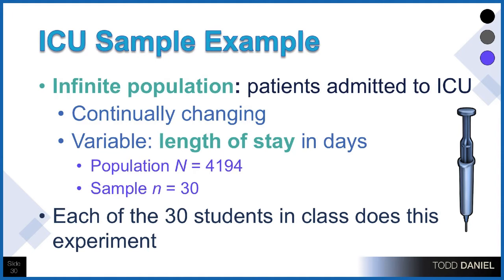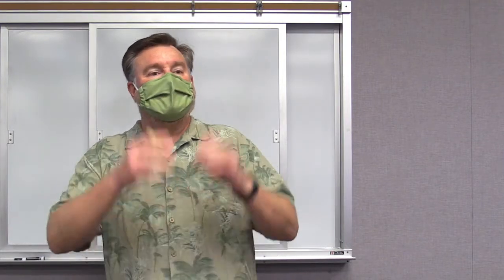Let's say there are 30 students in the class and everyone does this experiment. We all use the same data set. You randomly sample 30 cases and get a mean for your sample. Everyone has a mean for their sample, and none of those means are exactly the same. They are all point estimates of the population.